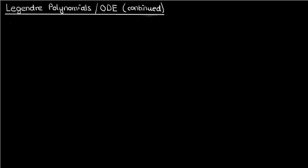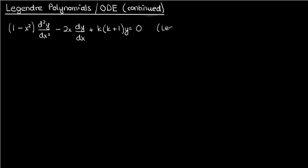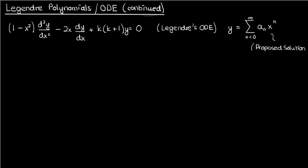So let's get started by quickly reviewing what we did in the last video. We solved Legendre's differential equation: 1 minus x squared times the second derivative of y with respect to x, minus 2x times the first derivative of y with respect to x, plus k times k plus 1 times y equals 0. We solved this using the typical series solution method, supposing that y was an infinite sum of a_n times x to the power n. Substituting this into the differential equation gave us a recursion relation.